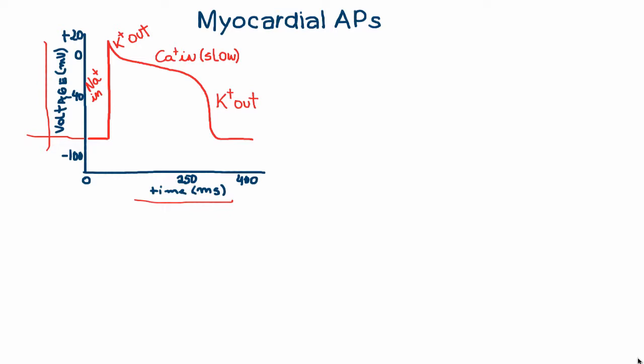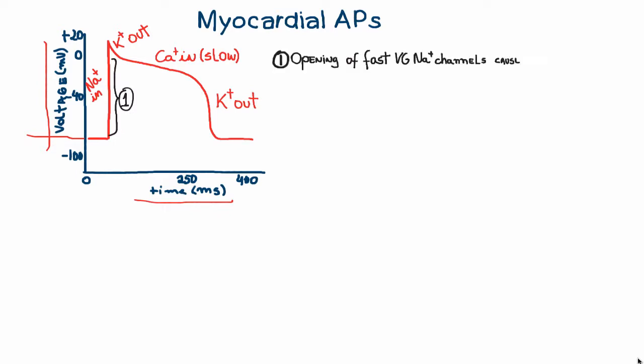In part one of the curve, what is happening is the opening of fast voltage-gated sodium channels. When I say fast, I mean they are really fast. You have this huge spike in the voltage of the cell, and this causes a depolarization — the cell becomes less polar with the inflow of positive charges such as sodium.